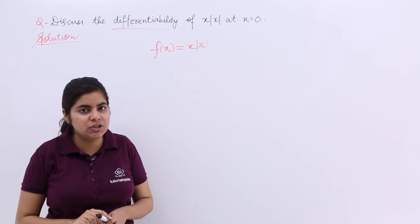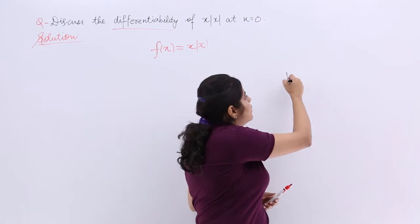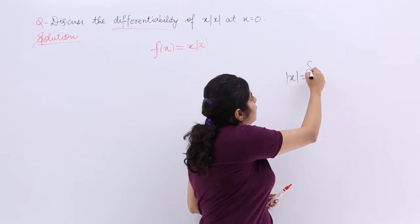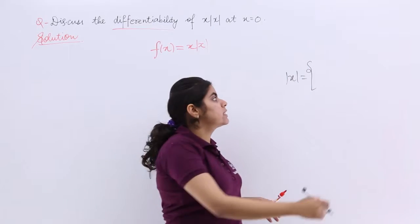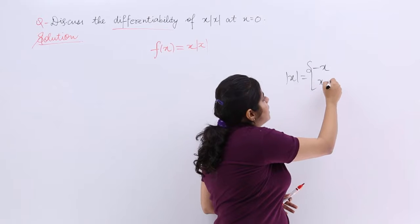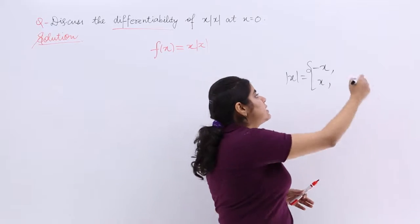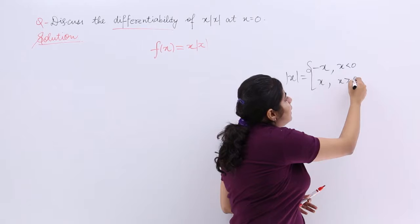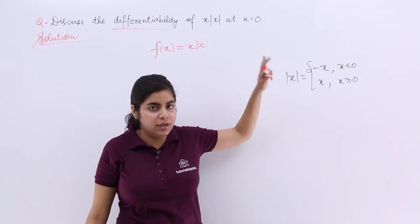When mod x comes into picture, we find it easy because we already know what is the interplay of mod x. Mod x has two values, minus x and x. Minus x when my x is less than 0, x when my x is greater than equal to 0. This we already know.